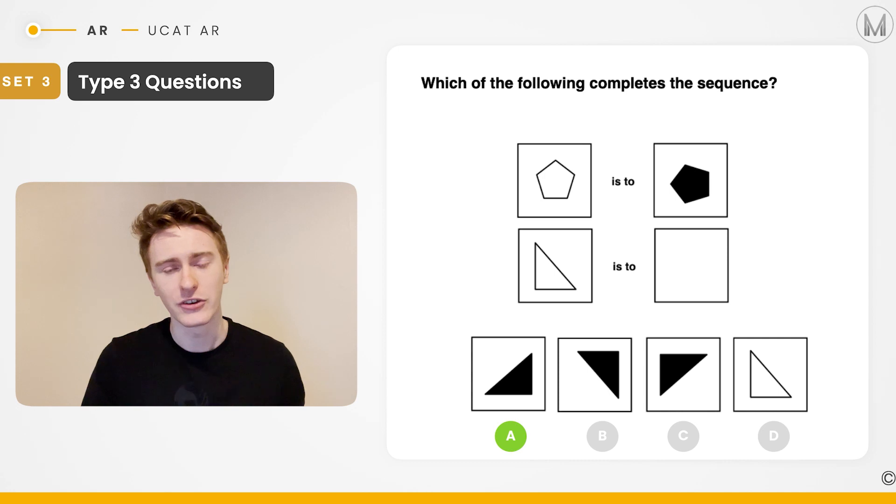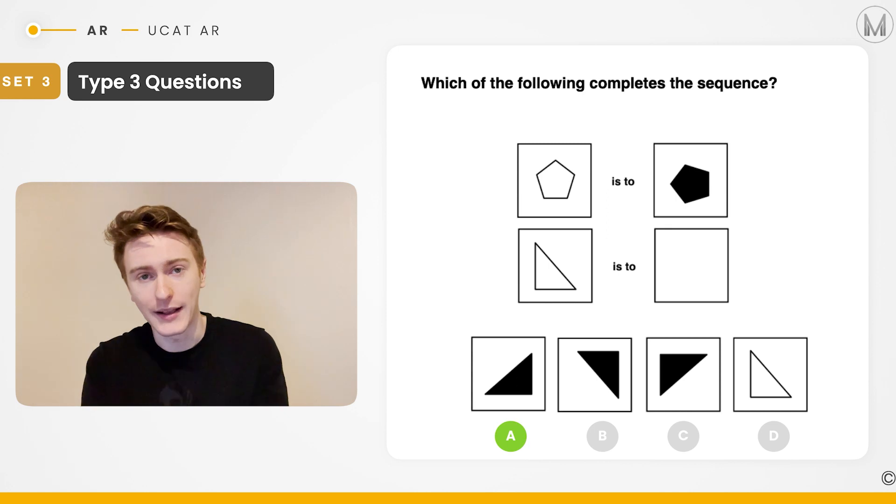The way type three questions work is that we're given a relationship between two shapes. In this case, with the pentagons, we're given the white pentagon is to the black pentagon as the white triangle is to blank. The key here is to look at what changed with the pentagons and apply it to what changes with the triangles. So in this case, the white pentagon goes to a black pentagon. There's a color switch.